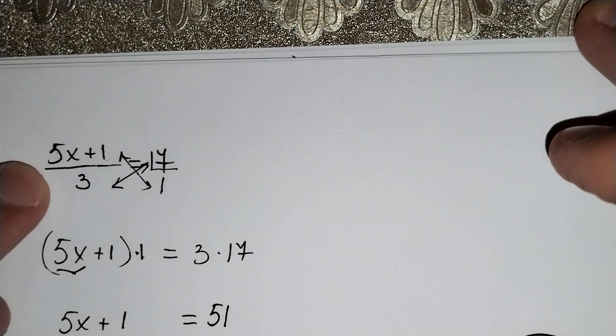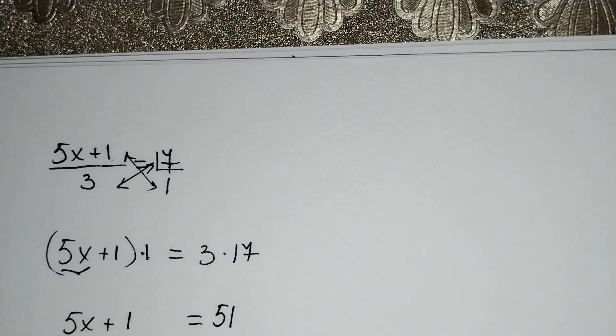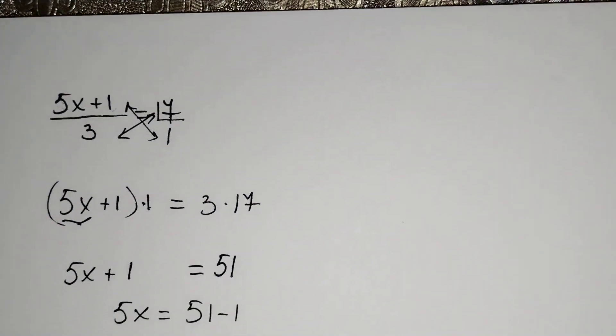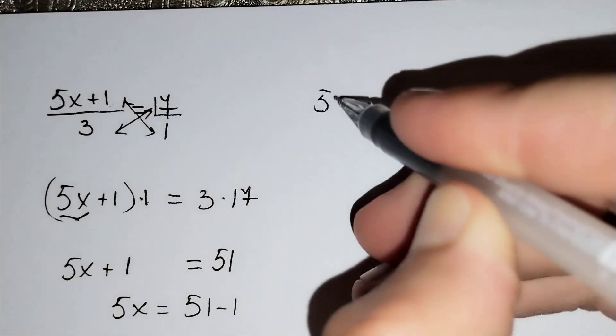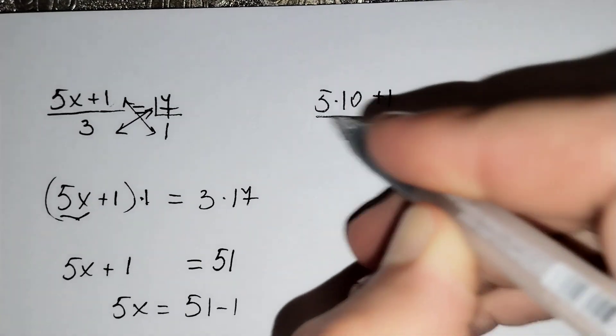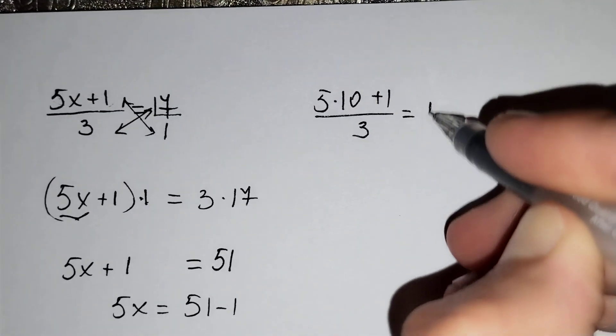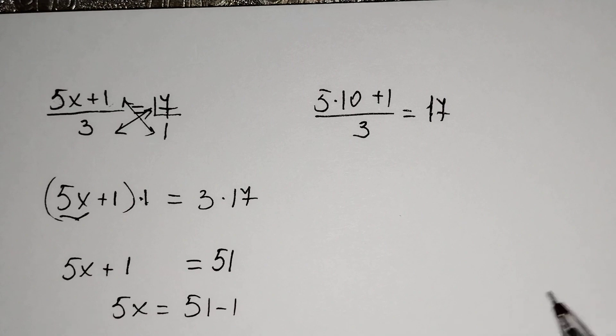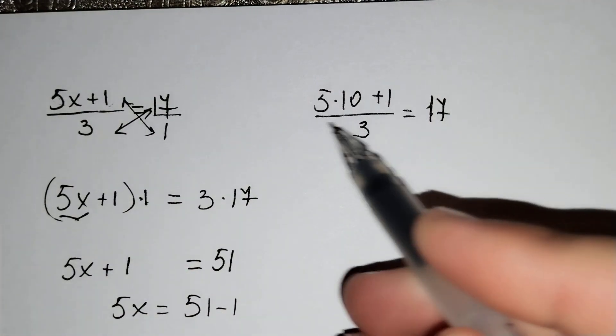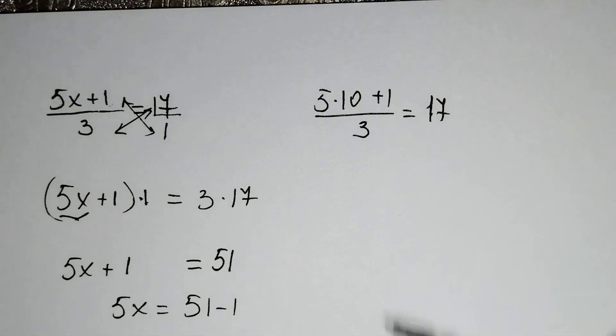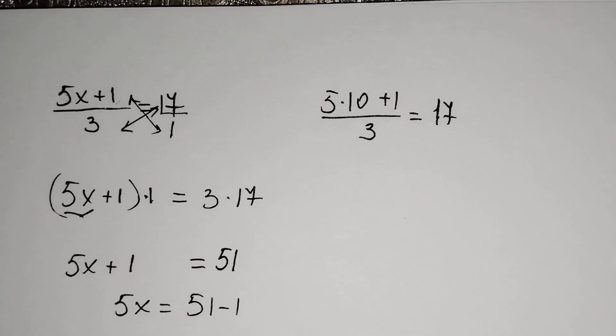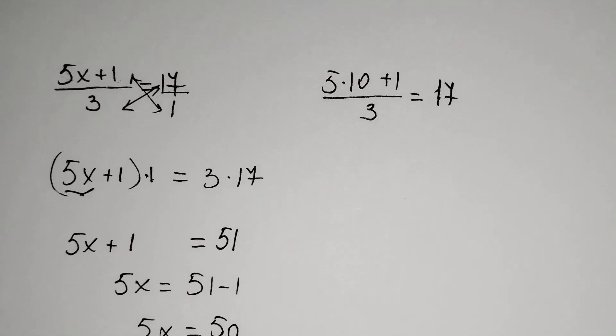(5x+1)/3 = 17. Is it true? 5 × 10 + 1, over 3, equals 17. This is true because 51/3 = 17. Our solution is correct.